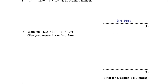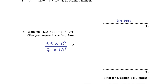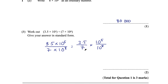Part B says work out 3.5 times 10 to the power of 5 divided by 7 times 10 to the power of 8, giving your answer in standard form. Write it as a fraction: 3.5 times 10 to the power of 5 over 7 times 10 to the power of 8. Then separate it as 3.5 over 7 multiplied by 10 to the power of 5 over 10 to the power of 8, which lets you subtract the powers.